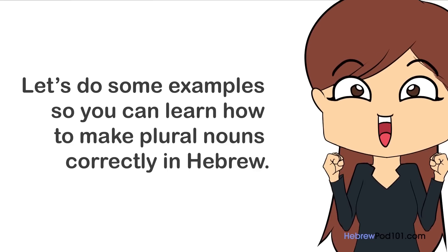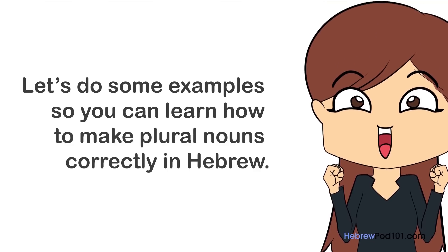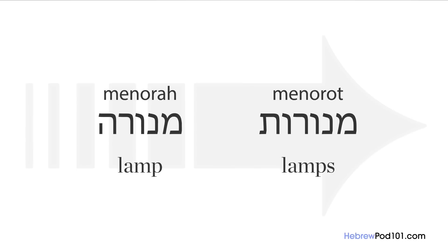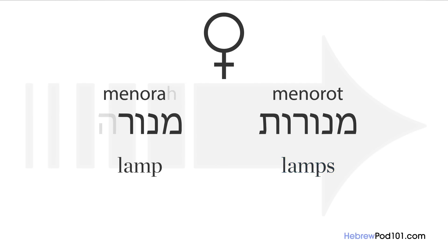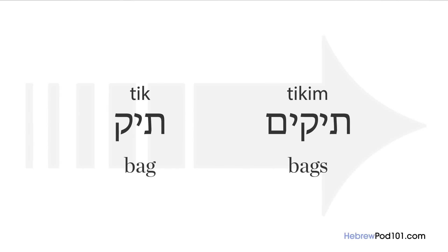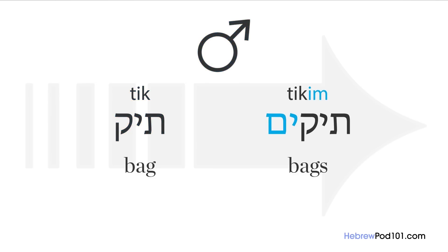Let's do some examples. The word 'lamp' in Hebrew is 'menora.' It ends in 'hay,' so it's feminine. To make a feminine noun plural, we remove the 'hay' and add 'vav-taf' (ot), getting 'menorot' — lamps. For a masculine noun: the word for 'bag' is 'tik.' Tik is masculine, so we add 'yod-mem' (im) at the end, and get 'tikim' — bags.